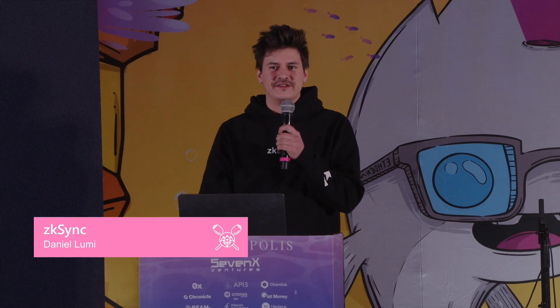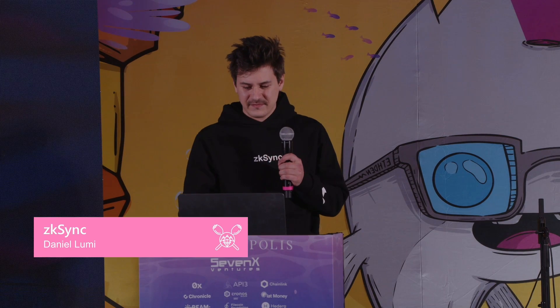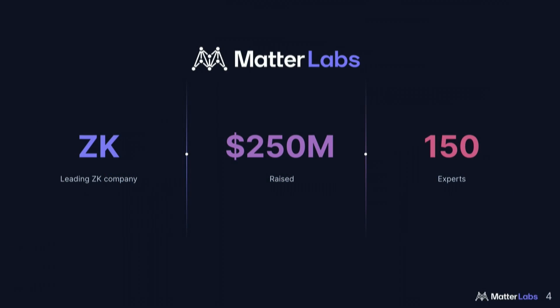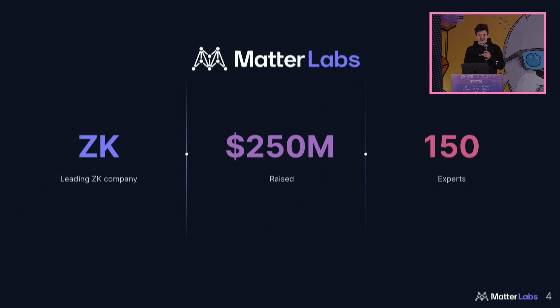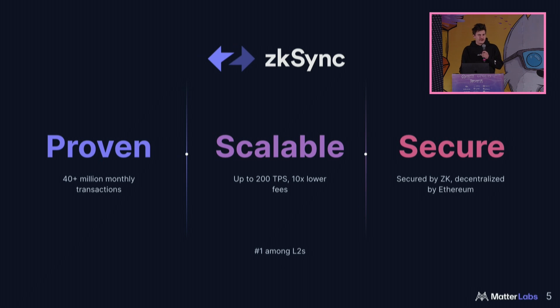Today we'll be talking about our vision for scaling the blockchain to mainstream adoption. First I'll go a little bit into what is Matter Labs and how does it relate to ZK Sync. Matter Labs is one of the leading ZK companies. We've raised over $250 million and we have over 150 experts in engineering and cryptography — a world-class team with people from SpaceX, Microsoft, Google, and Uber. ZK Sync is an L2 built on top of Ethereum that uses zero-knowledge proofs. We as Matter Labs were the inventors of ZK Sync and now we're one of the main core contributors, along with many others such as Lambda, Transactions Fusion, and many more.